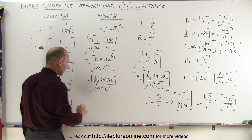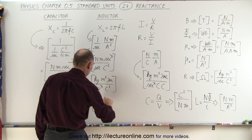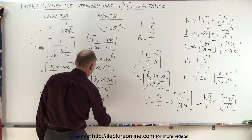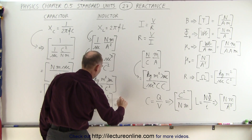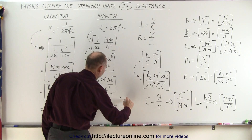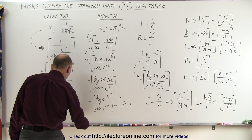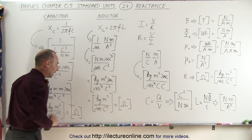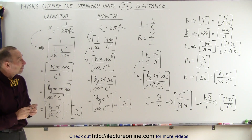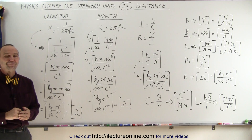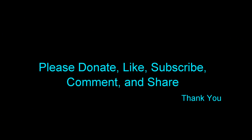Finally, we can see this equals kilograms meters squared per second per coulomb squared — indeed the units for resistance, or ohms. Just like capacitive reactance, inductive reactance also has the units of ohms. And there you go — that's how we do that. Thank you.